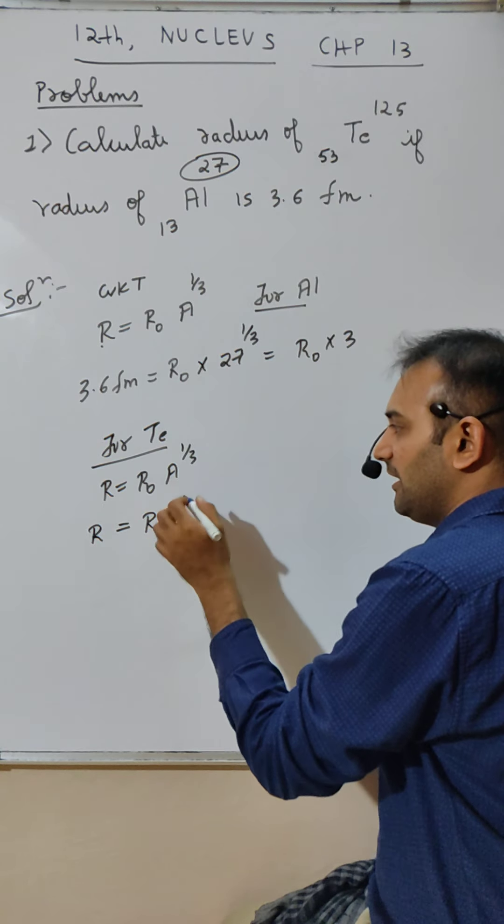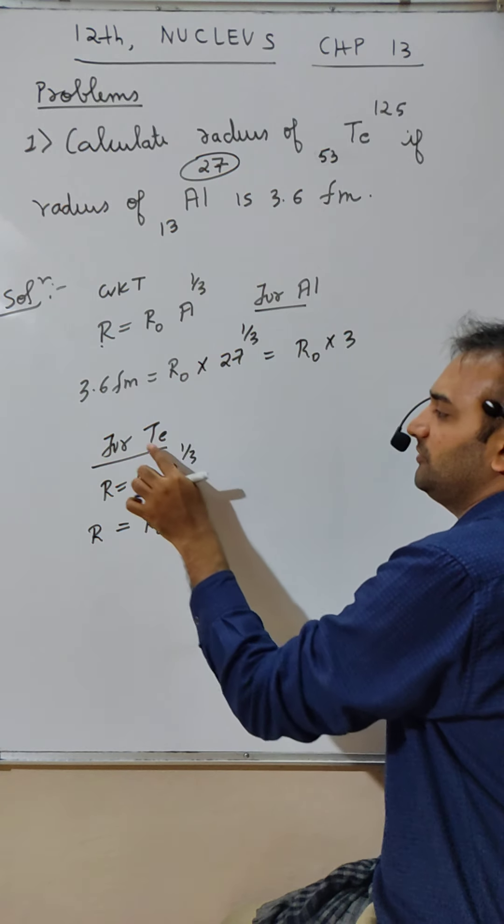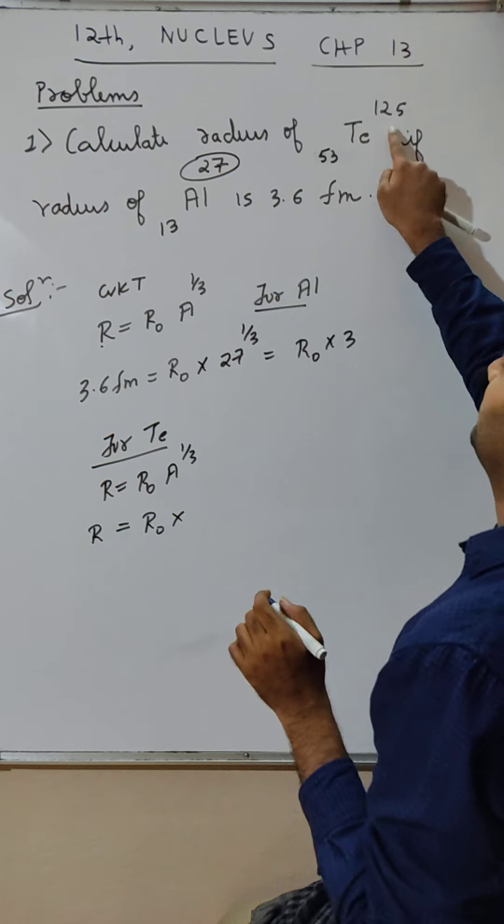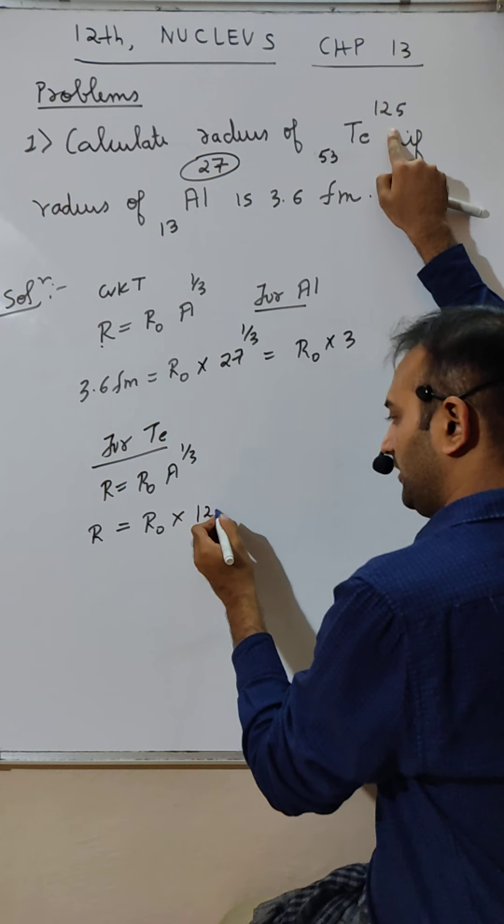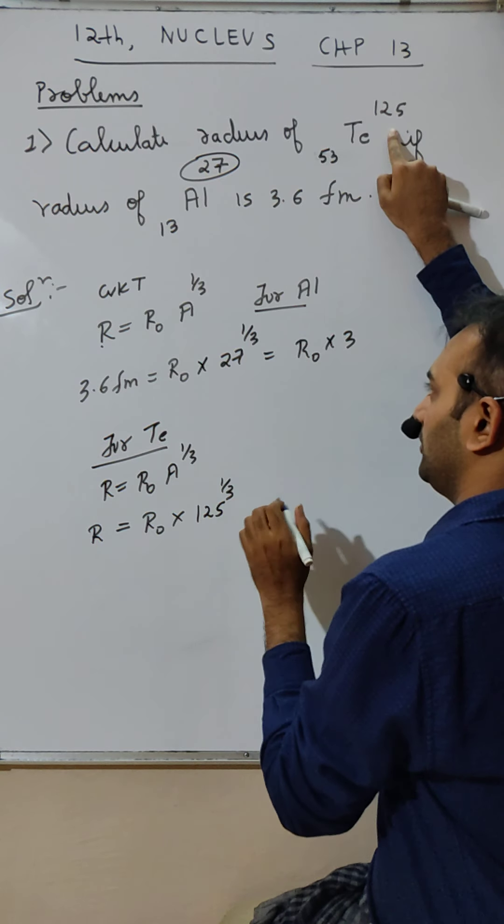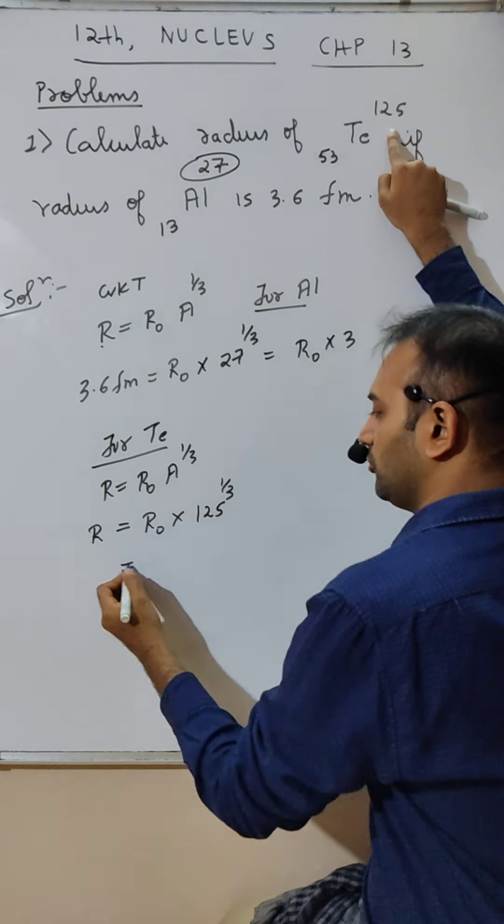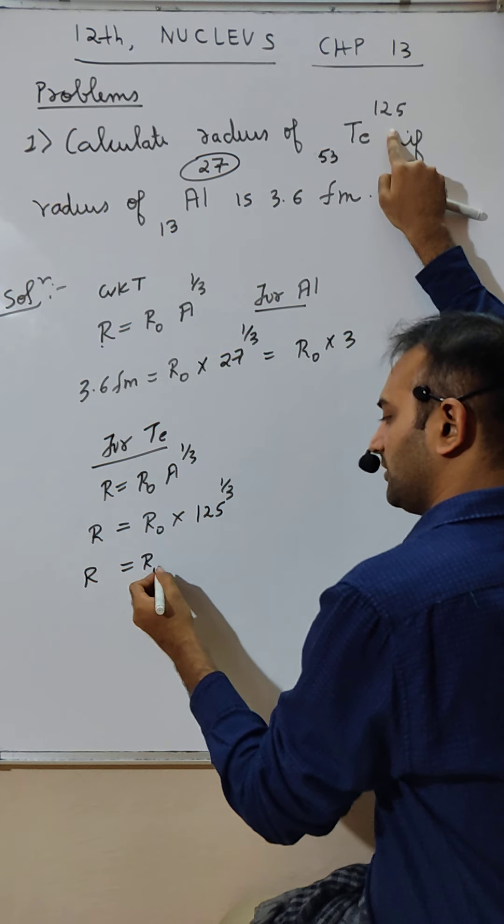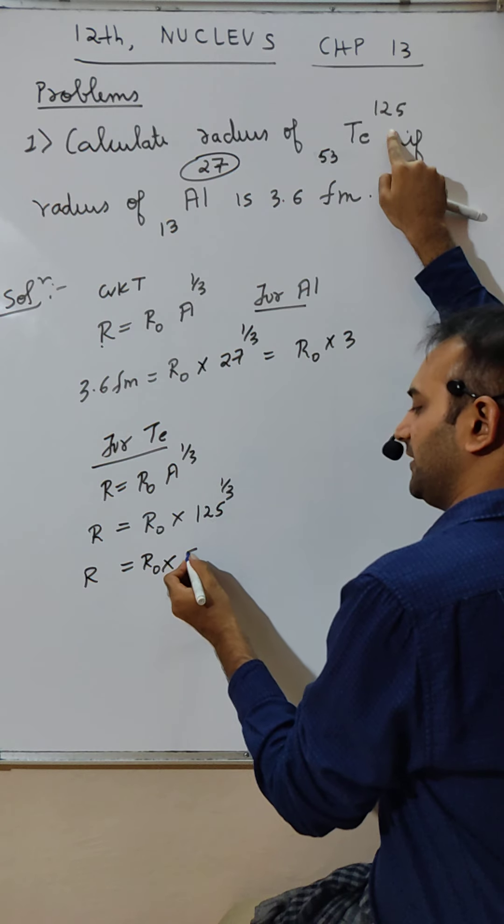Keep it as it is. Atomic mass number of Te is 125, so 125's cube root. 125's cube root is - R as it is, R₀ as it is, 125's cube root is 5.